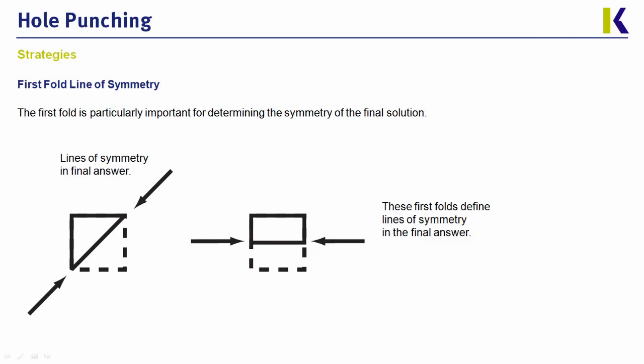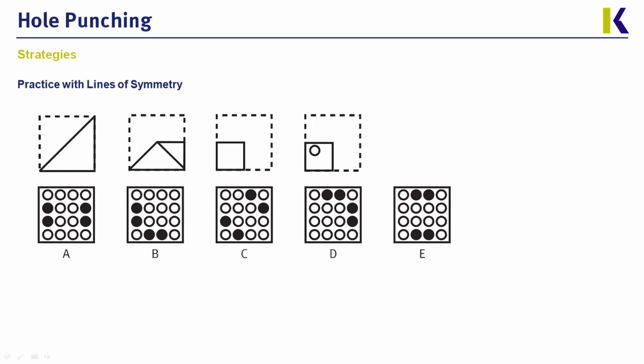The first strategy is to use the line of symmetry of the first fold. This is a process you'll want to do first for every hole punching question you tackle. The idea is that the first fold of the paper will always create a line of symmetry. So whether you're folding in half, having a corner fold, having a diagonal fold, wherever that initial fold was, you're creating two identical segments. So whatever happens in one segment must happen in the other. Therefore, if you look at the answer choices, you'll find that they must be symmetric as well along the line of that first fold. The easiest way to understand this strategy is to see it in action. So let's look at an example question together.